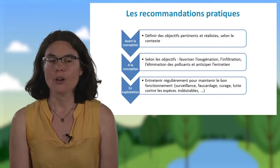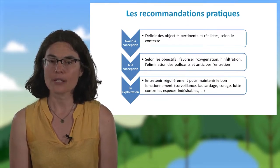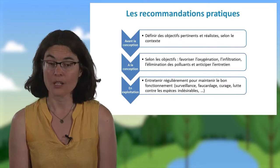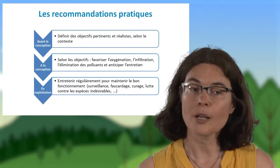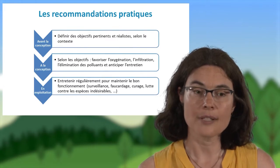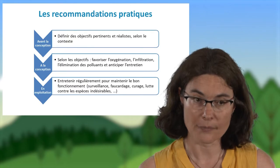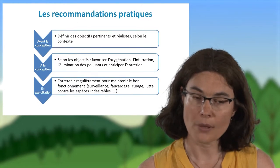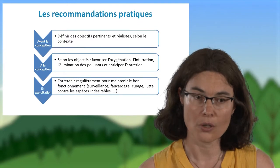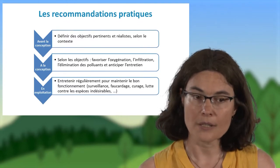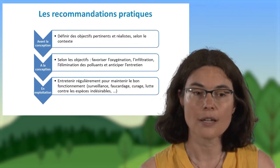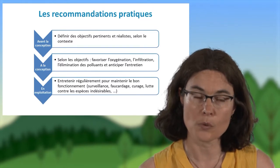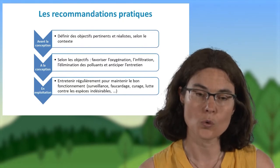Avant la conception, on devra être vigilant aux objectifs, de façon à ce qu'ils soient pertinents et réalistes selon le contexte. Il faudra ainsi se poser les bonnes questions : quelle est la performance du système d'assainissement en amont ? Existe-t-il des polluants qui restent à éliminer ? Quel est l'espace disponible à côté ? Les sols sont-ils perméables ? Existe-t-il des enjeux pour les milieux récepteurs, usage particulier à l'aval tel que la baignade, biodiversité spécifique à protéger, etc. ? On pourra alors définir des objectifs pertinents et faire les choix de conception qui correspondent : type et taille de la zone de rejet végétalisée.